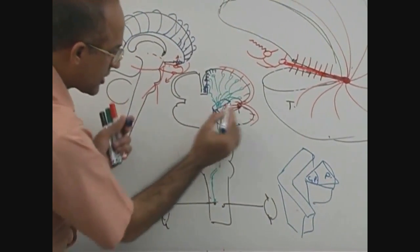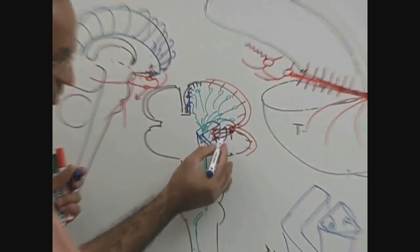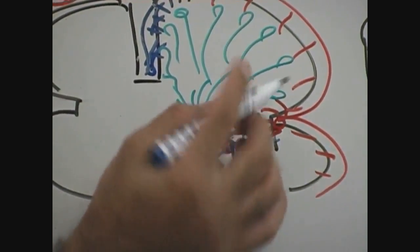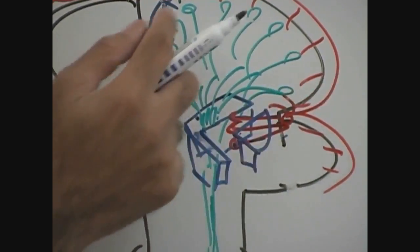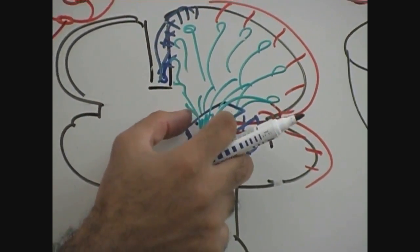Now this structure putamen is here. You see this striatal branches are passing through that and coming to the internal capsule. If these are blocked, then all these fibers either from middle cerebral cortex or from the anterior cerebral artery cortex, all of them are put together and they are dead here.